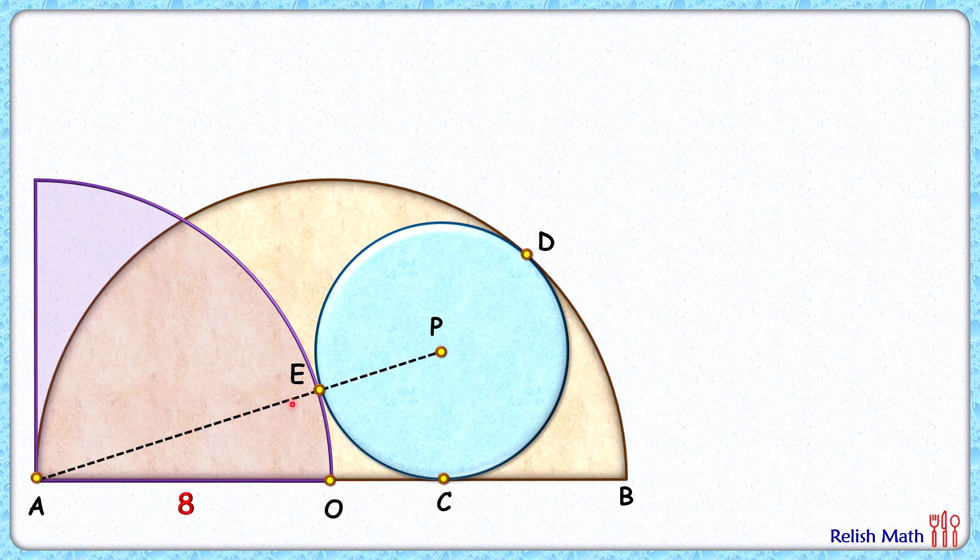Here, AE length is the radius of the quadrant, that's 8 centimeters. EP is the radius of the blue circle, let's say it's r centimeters, so PC will also be radius r. Now OC length, let's assume it's x centimeters.